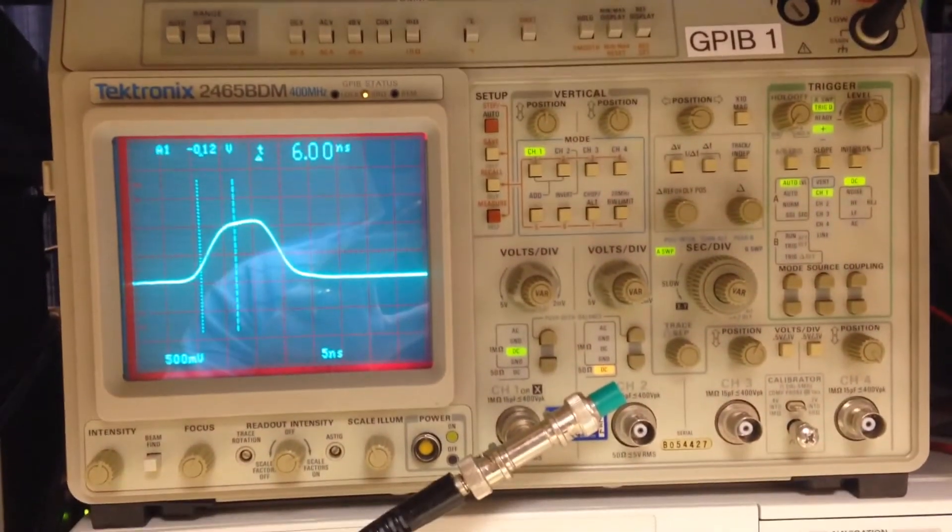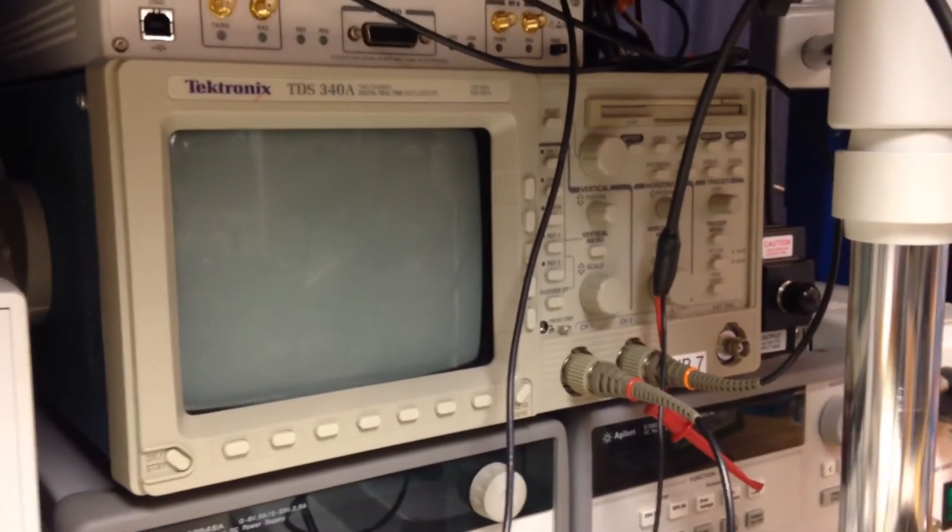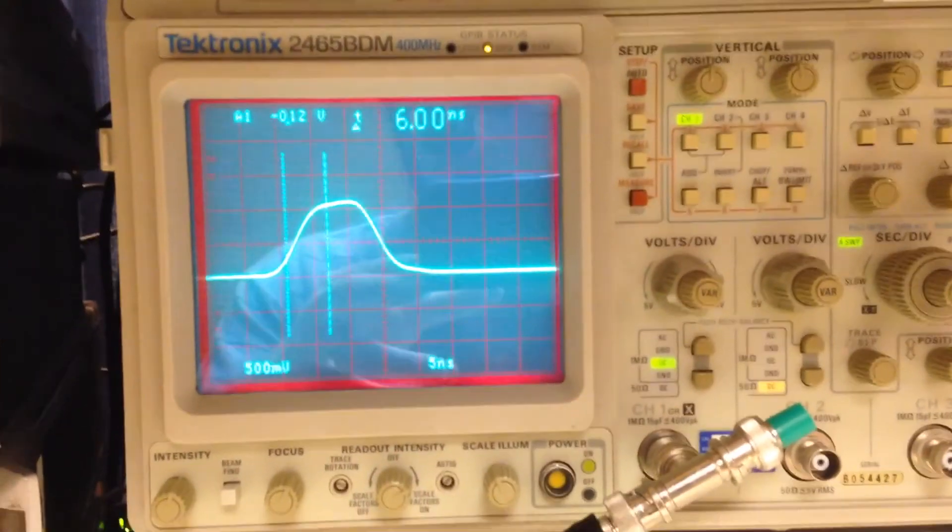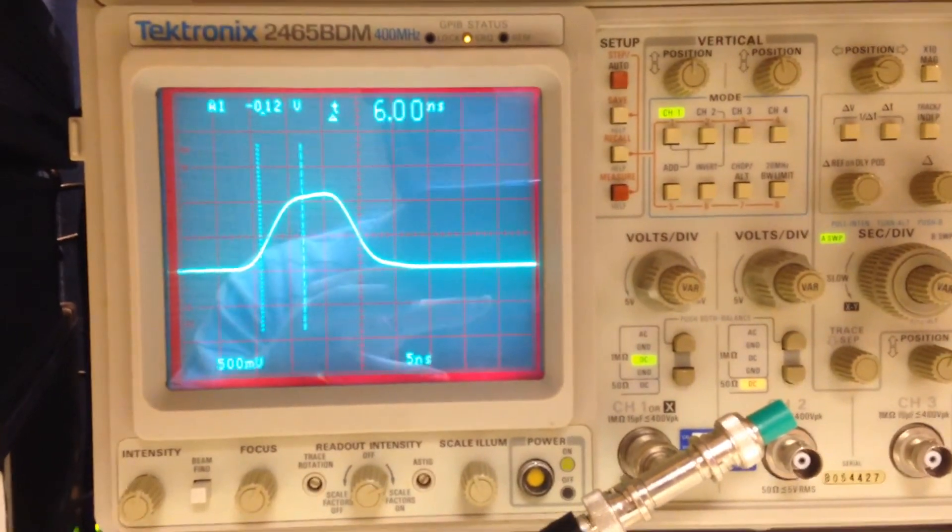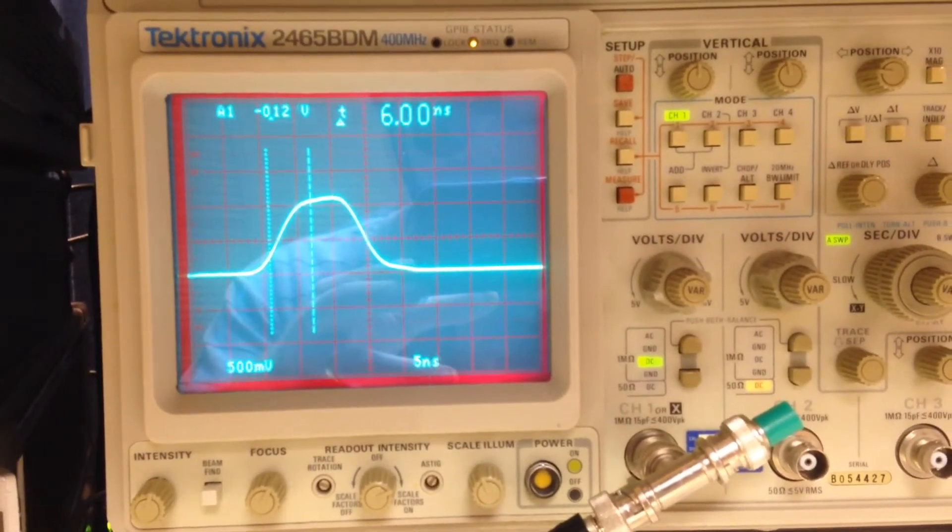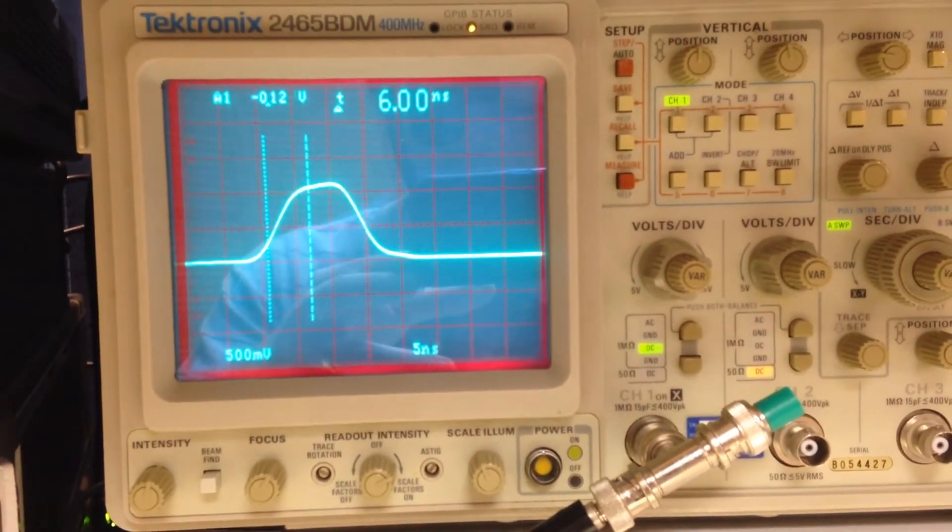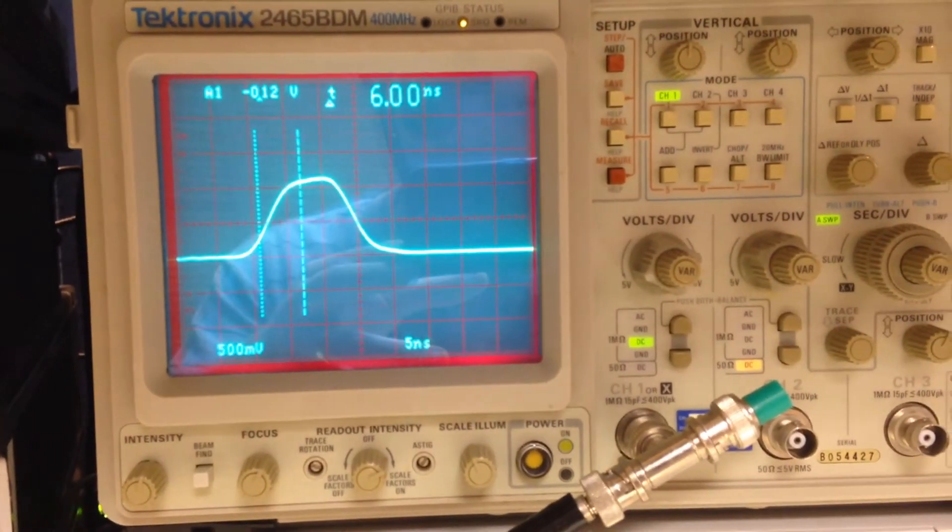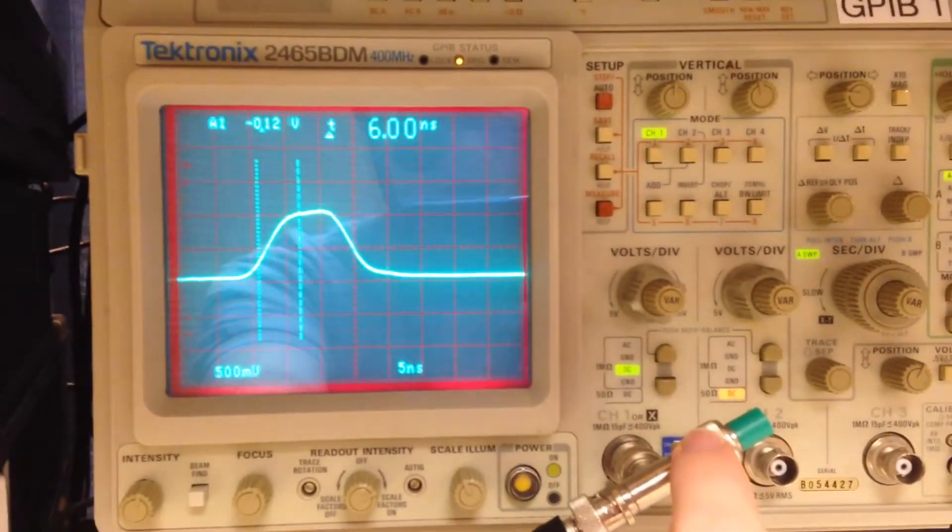I prefer using this thing compared to the Tektronix digital scope right there, which is great for single shot work. But it doesn't have the bandwidth, and it's just a lot nicer to use this thing. So I've got the time base zoomed all the way in here, and I've got that pulse going there. You can see it is about a 6 nanosecond rise time. Rise time is from the 10% amplitude up to the 90% amplitude. So it's a pretty narrow pulse even though it looks wide here on the scope.